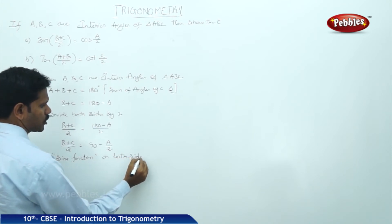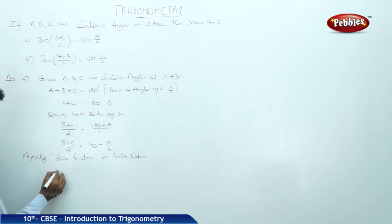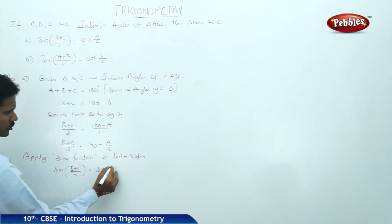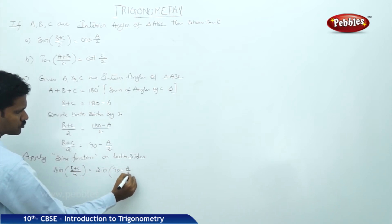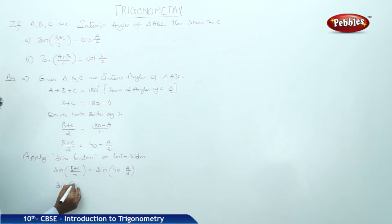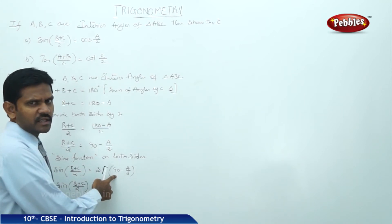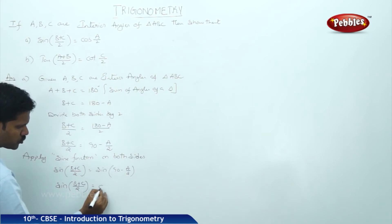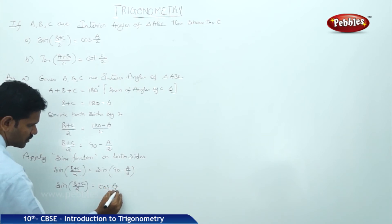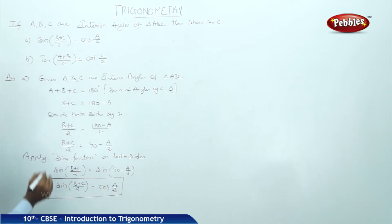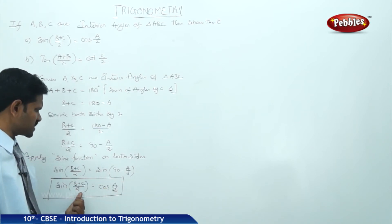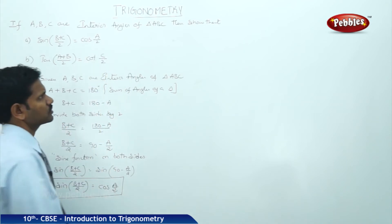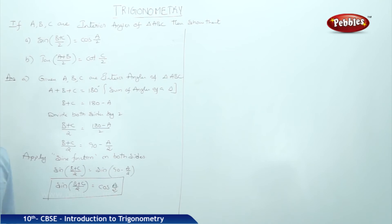Apply sine function on both sides. That is, sin((B+C)/2) = sin(90 - A/2). With respect to 90 degrees, trigonometric functions change — sine changes to cos. Therefore, sin((B+C)/2) = cos(A/2), which is hence proved. Similarly, follow the second condition with the same procedure.